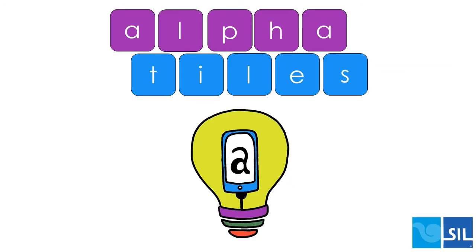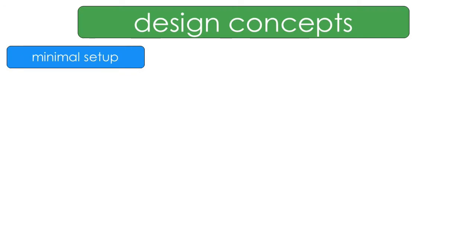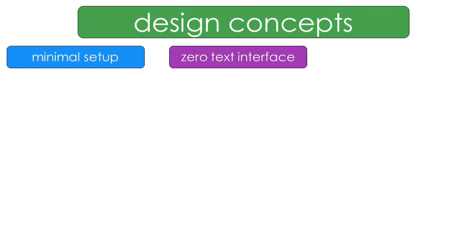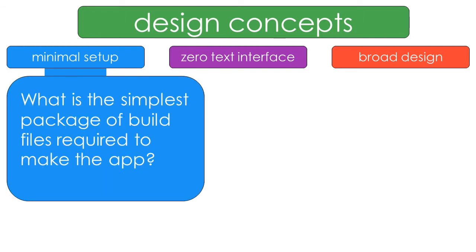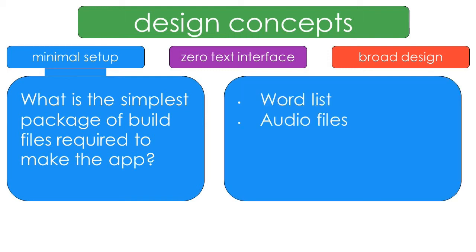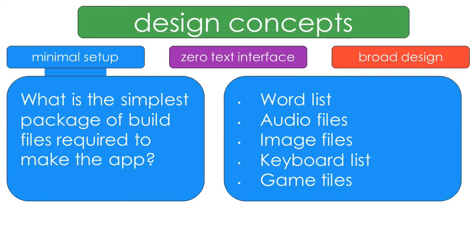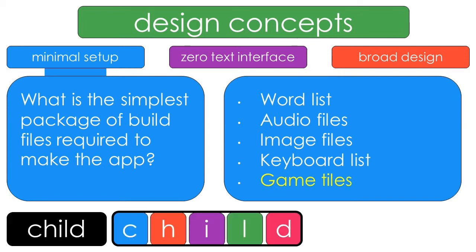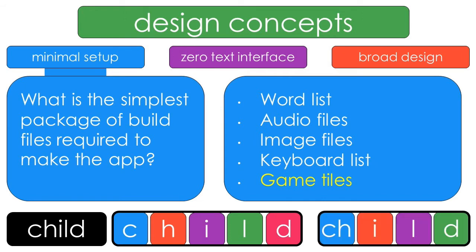Let's reflect on what we just saw in the demo. There are three related design concepts: minimal setup, a zero text interface, and a broad design. To start, we want to ask: what is the simplest package of build files required to make the app? You definitely need a word list, audio files, and image files. For the typing activities, we need to build an in-app keyboard based on a list of keys. And for the games, we need game tiles — the individual tiles that each letter appears on. For a word like 'child,' we might decide we want to teach 'ch' as a unit using a single game tile. Each language development team defines these features in their game tile list.